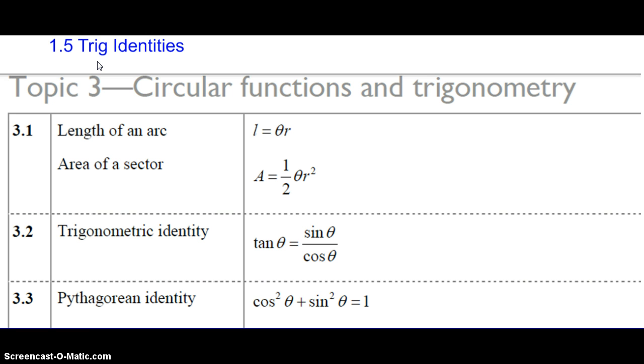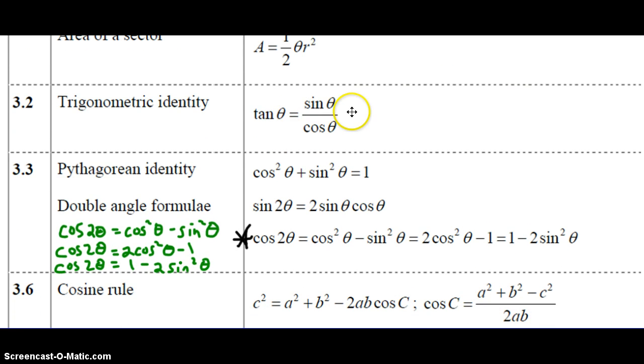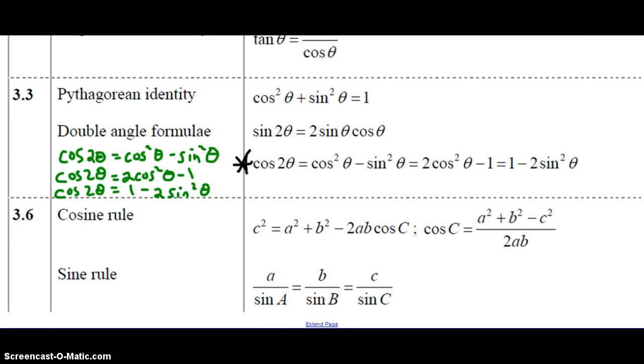If you turn to the page that has topic 2 and topic 3 formulas and specifically go to topic 3 and the circular functions and trigonometry formulas, you can see we haven't used these two formulas yet but we talked briefly about them. Tonight's notes will be talking about the trig identity, our Pythagorean identity, our double angle formulas, the cosine rule and the sine rule.